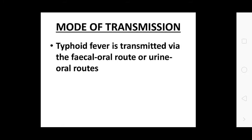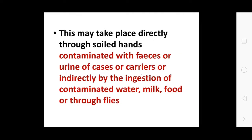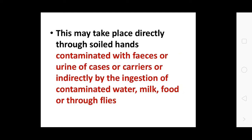Mode of transmission: typhoid is transmitted by the fecal-oral route and urine-oral route. Transmission may occur directly through hands, soil, and feces or urine of cases and carriers, or indirectly by ingestion of contaminated water, milk, food, and via flies.